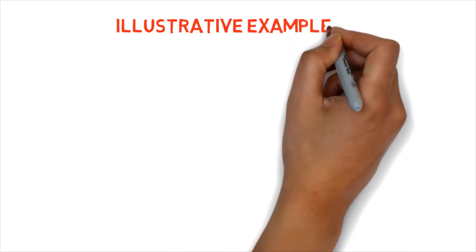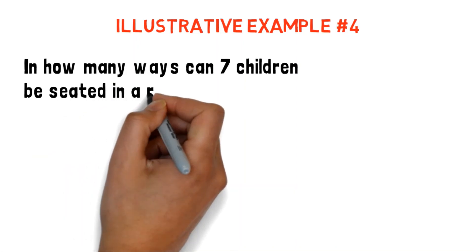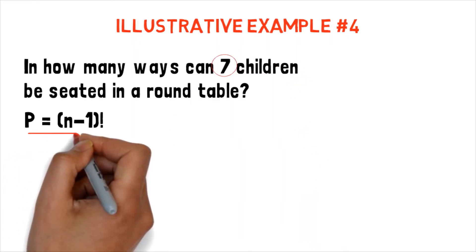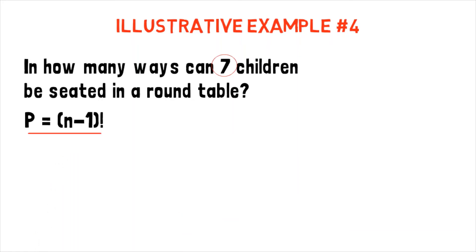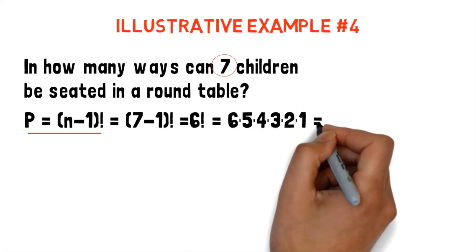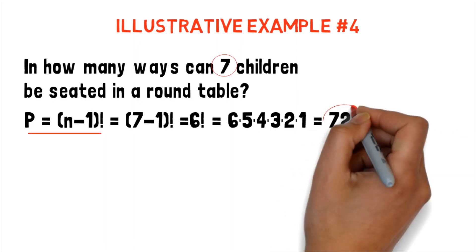Illustrative example number 4: In how many ways can 7 children be seated at a round table? Since the problem involves a round table, we use the circular permutation formula where n equals 7. Using P equals (n minus 1) factorial, we get (7 minus 1) factorial, which equals 6 factorial, giving us 720. So there are 720 ways.